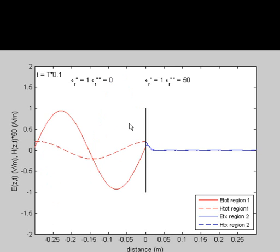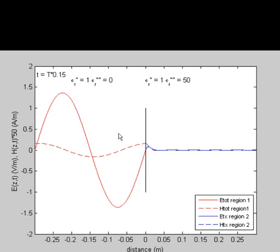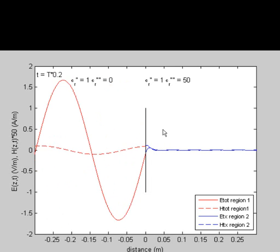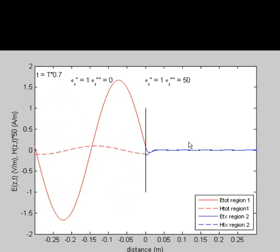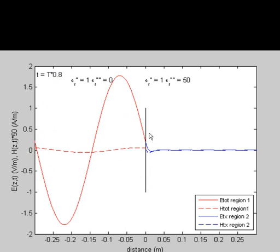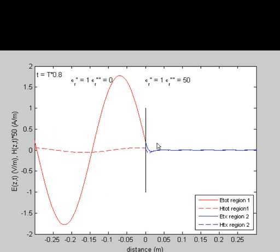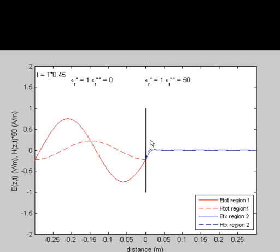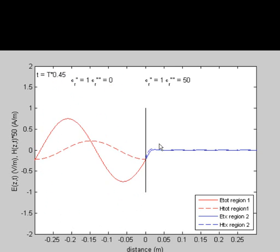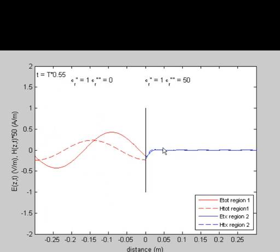By looking at the peaks of the electric and the magnetic field, we see that they are out of phase in both time and space. That's due to the fact that we have a lossy medium 2 that is a good conductor. Looking at the transmitted wave, the electric field and the magnetic field are still out of phase as a function of time and space, and in this case it is decaying much faster relative to its wavelength. That's because the attenuation constant alpha is much larger, so the field decays much faster than the wavelength.